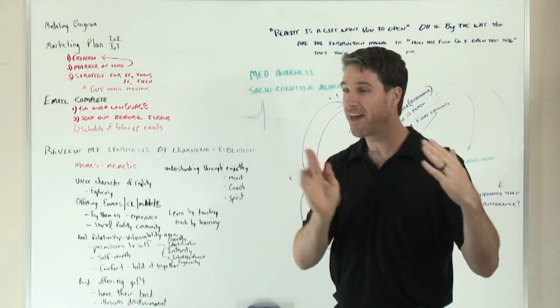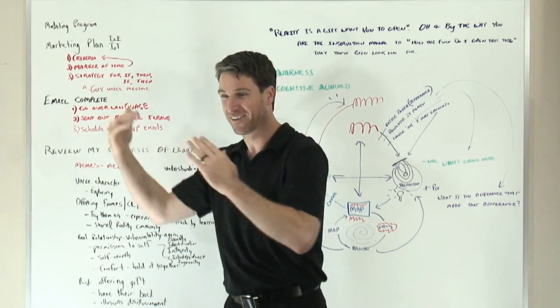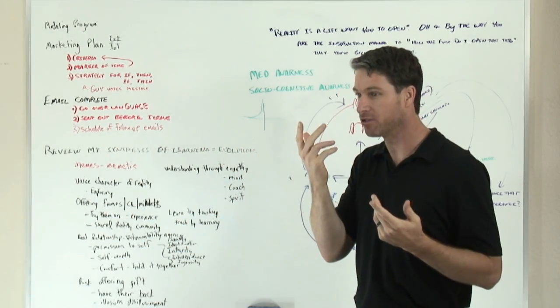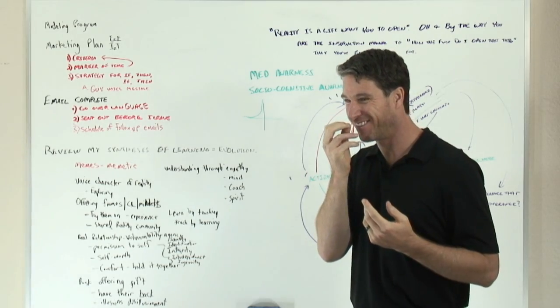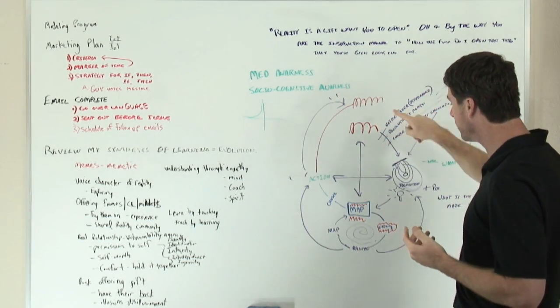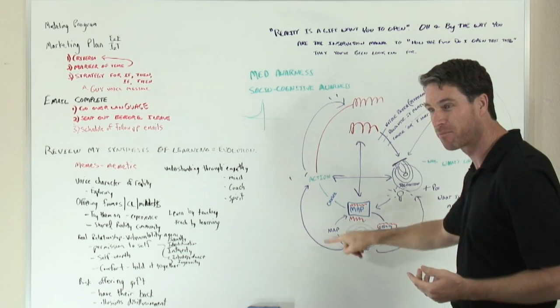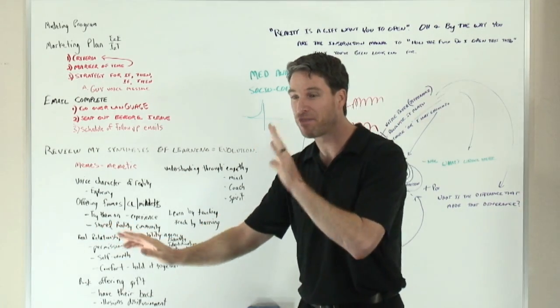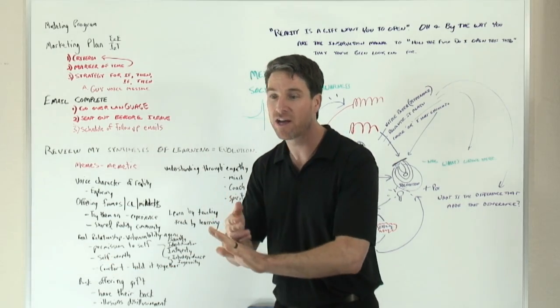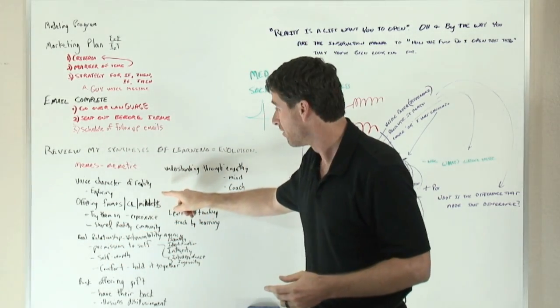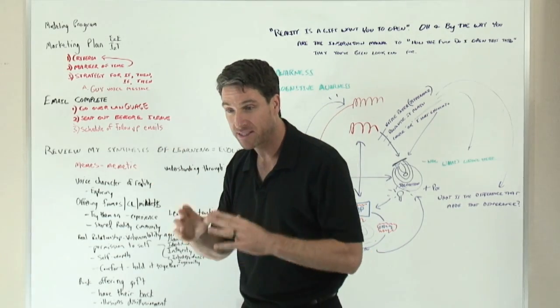There's a lot of paths it can take, but in humans it's taken this path of we created language. As soon as we created language, we could encode it into maps. We now had a second-order experience. Those maps then create our world, and that's memetics.